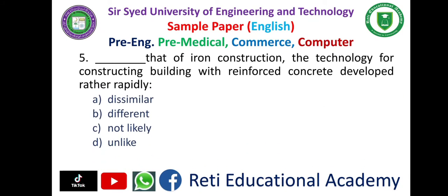Question number five. 'Dash that of iron constructions, the technology for constructing buildings with reinforced concrete developed rather rapidly.' A. Dissimilar. B. Different. C. Not likely. D. Unlike. And the correct answer is D. Unlike.